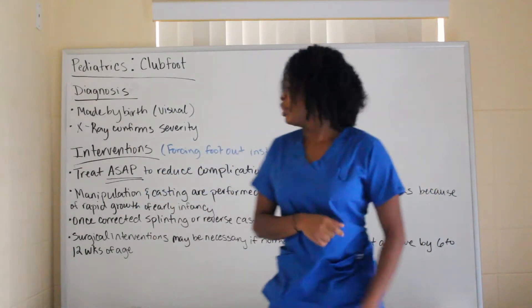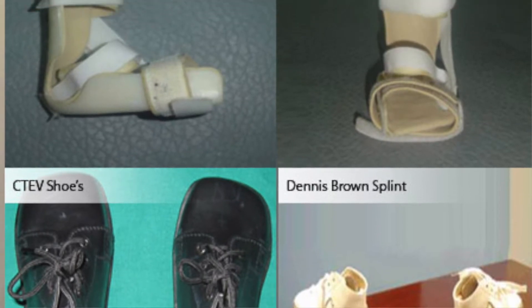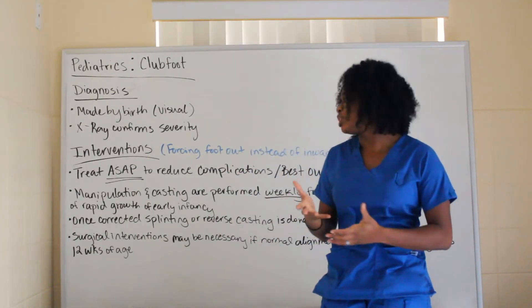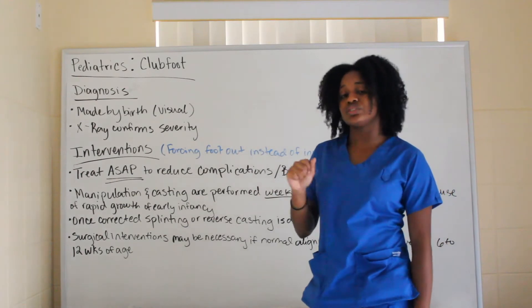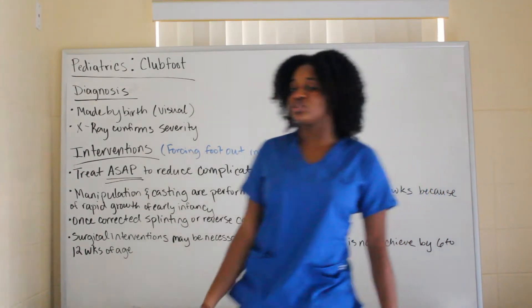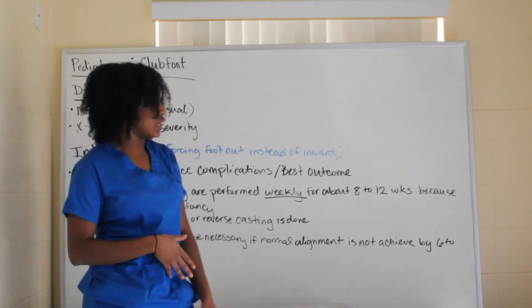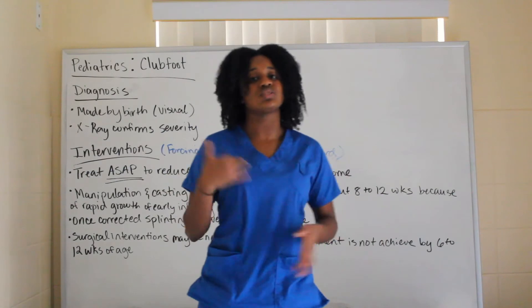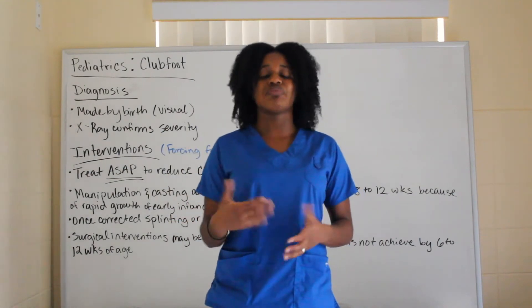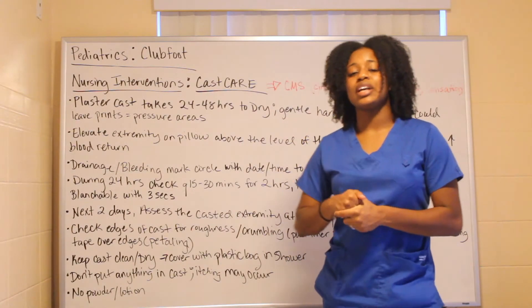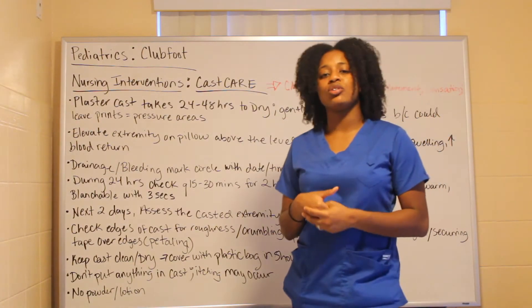Once corrected, corrective splinting or reverse casting is done. If correction is not achieved after about twelve weeks, surgical intervention takes place when there is no normal alignment occurring. You want to see correction within six to twelve weeks; if not, proceed with surgical intervention.